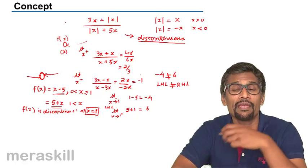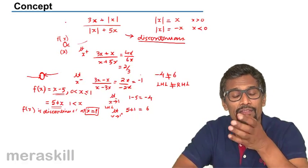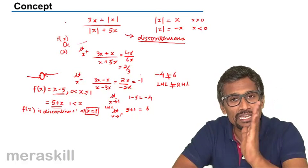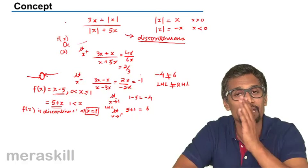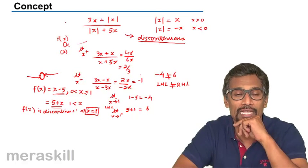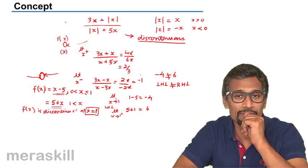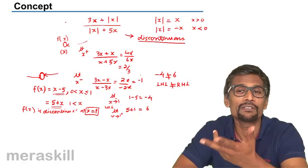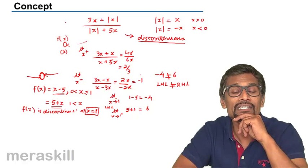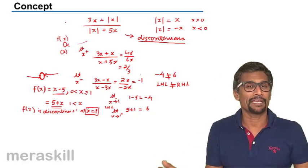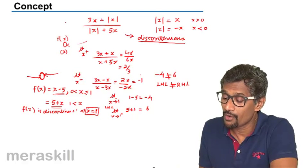So there are two simple ways to test continuity. First, check which values of x make the function indeterminate — typically when the denominator equals 0. Second, for a particular value of x, check the left-hand limit (values just less than x) and the right-hand limit (values just greater than x). If both limits converge to the same value, the function is continuous; if they differ, the function is discontinuous at that value of x.